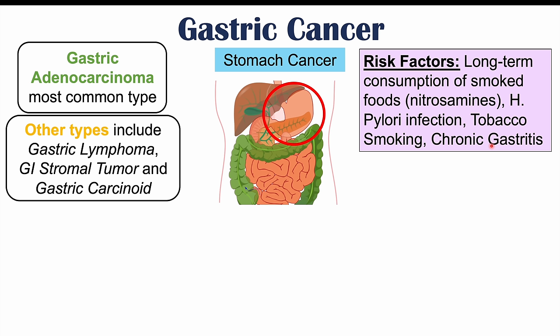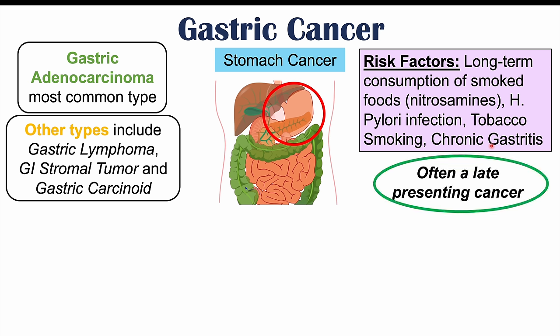Stomach cancer is often a late-presenting cancer, meaning we don't often catch it early on. It's usually detected later, so the cancer has been there for a longer period of time. By the time individuals start to experience more significant symptoms, it's already at a later stage of presentation. That's important to note because some of the skin findings we're going to talk about can help us detect the cancer earlier.